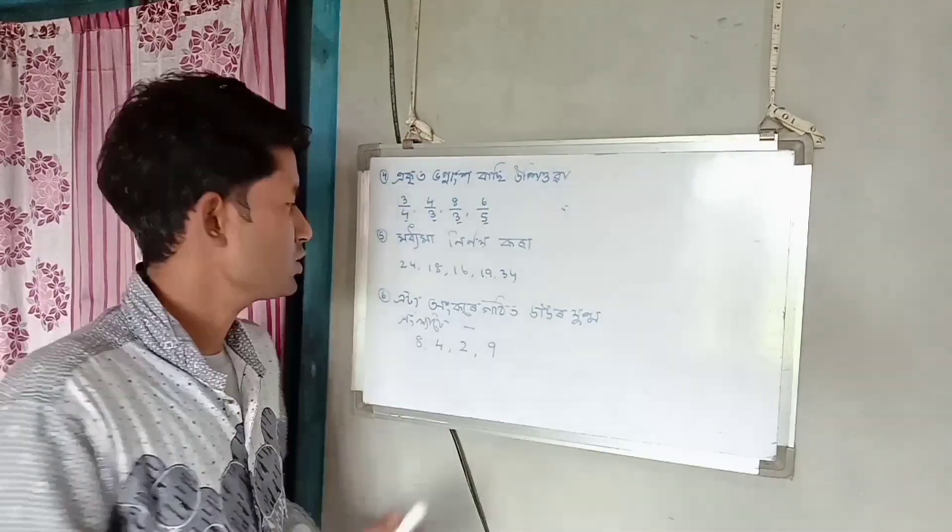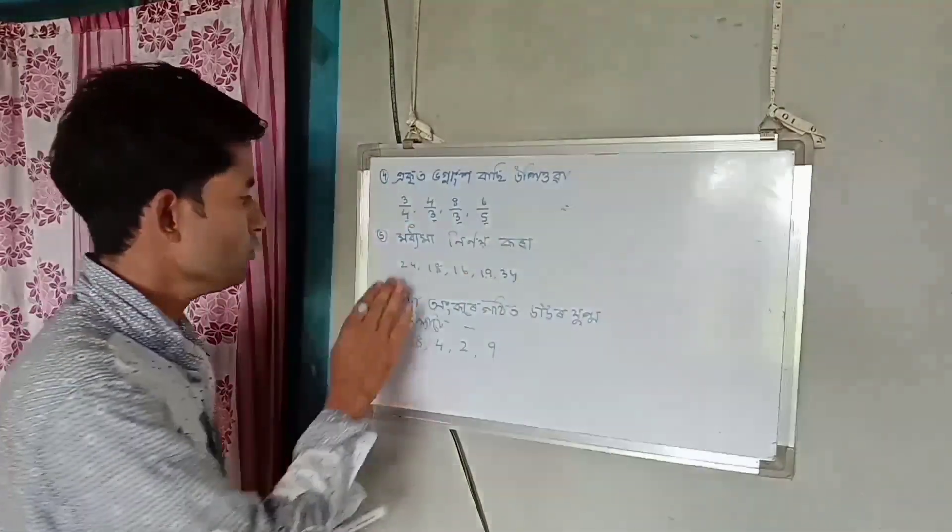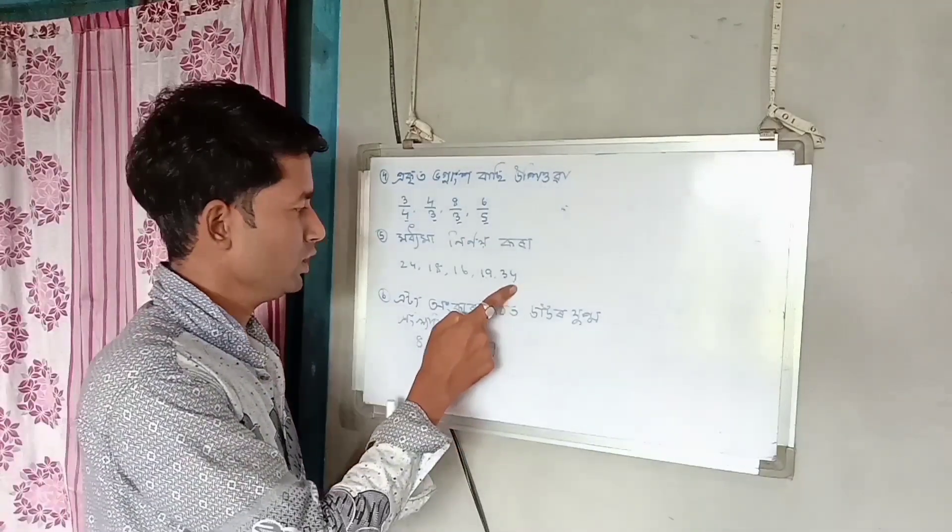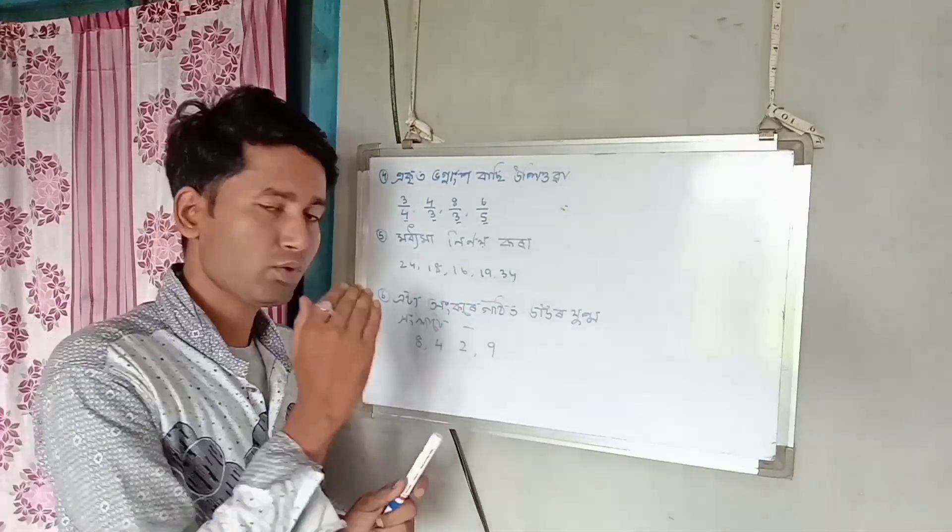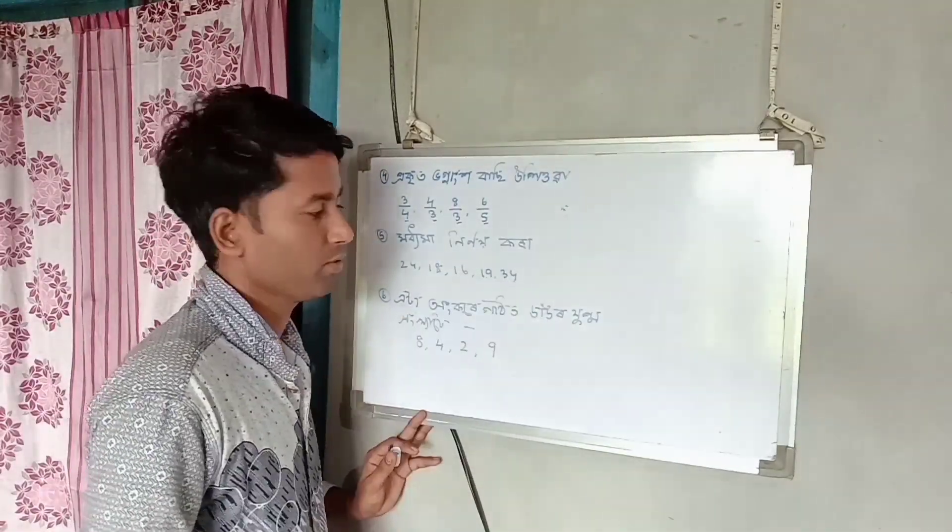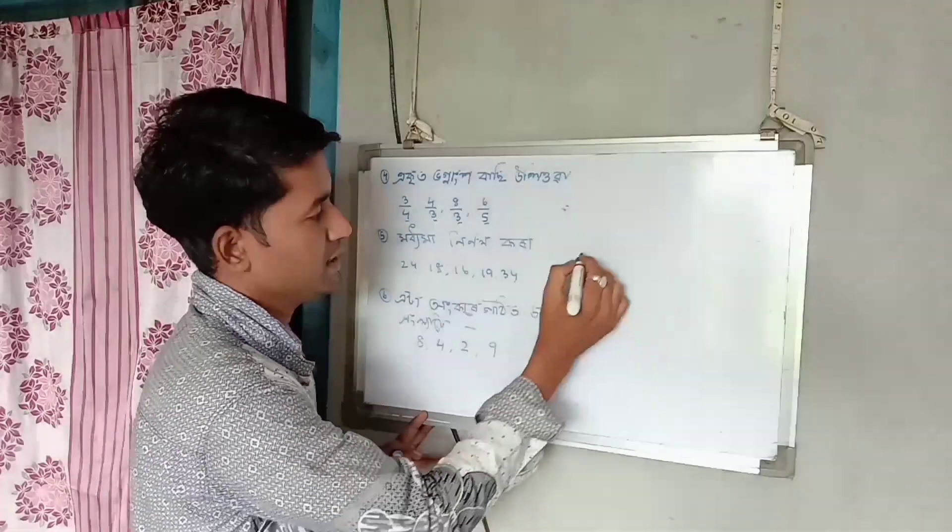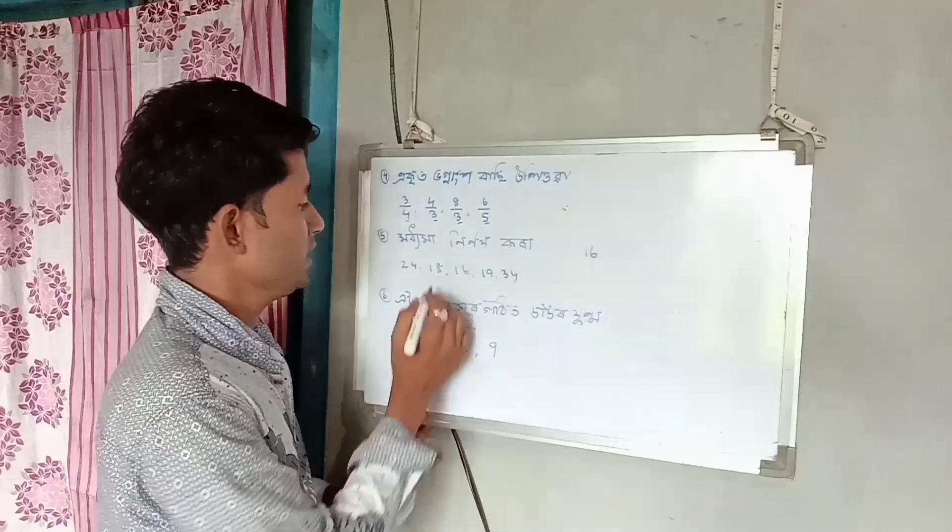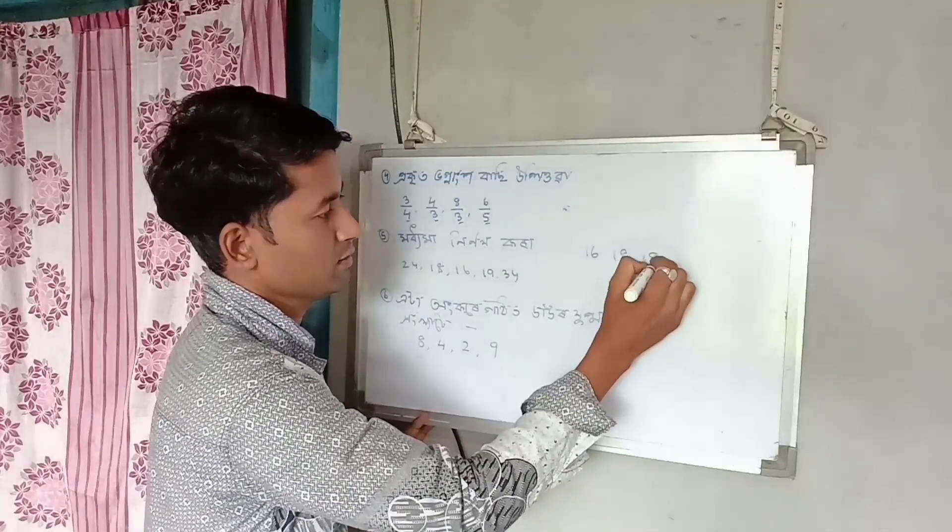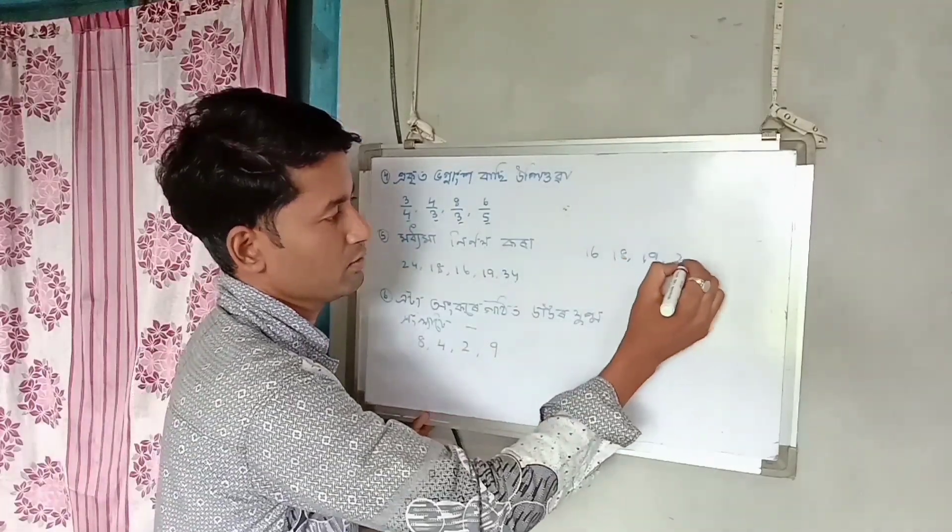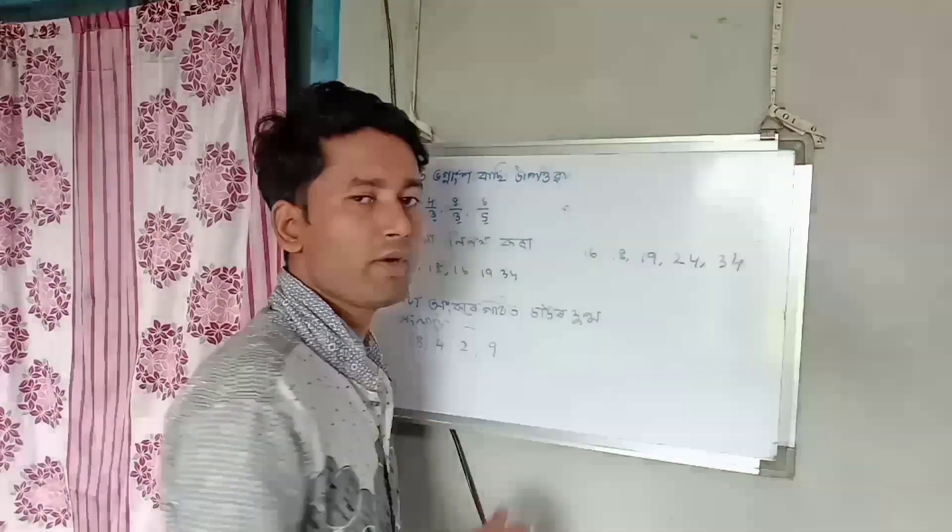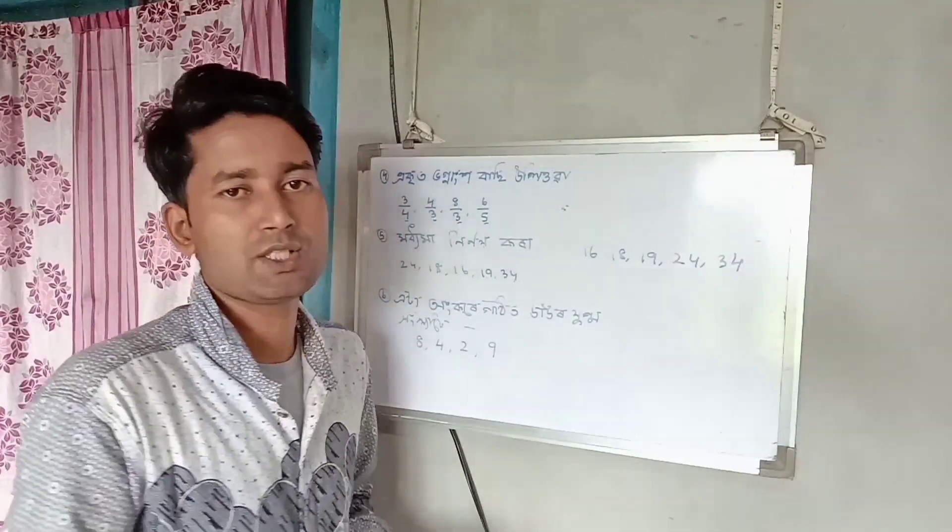Next question: find the median from these numbers - 24, 18, 16, 19, 34. To find the median, we arrange them in ascending order: 16, 18, 19, 24, 34. The middle value is 19, so the median is 19.